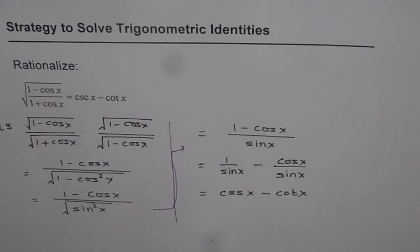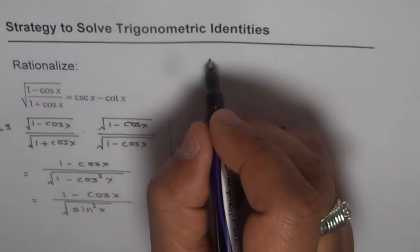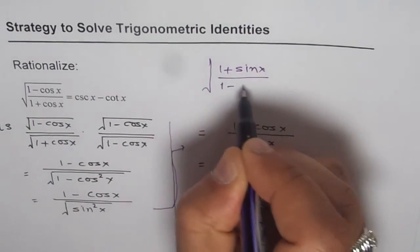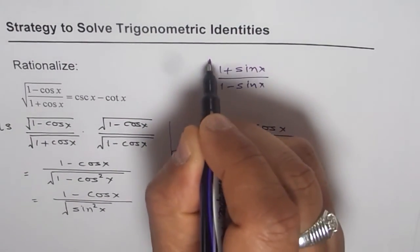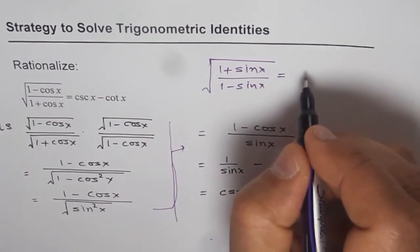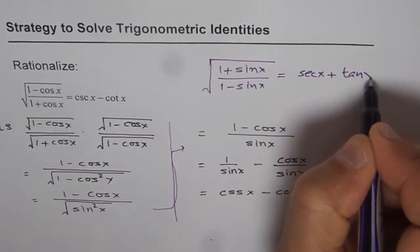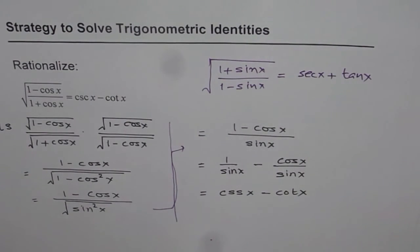For you to practice, I will give you a very similar question which you can try out: square root of (1 plus sine x) over (1 minus sine x) equals secant x plus tan x. Apply the same technique. Rationalize the denominator and get your result. Thank you.